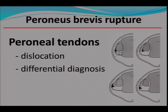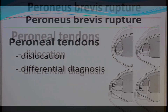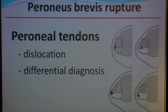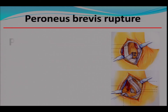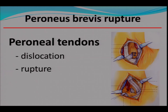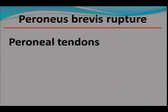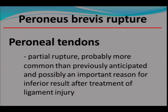Moving to the next topic — differential diagnosis — we come to the peroneus brevis rupture, which is probably much more common than we usually anticipate. This is a very important differential diagnosis, especially when we have long-term problems after ankle distortion that won't resolve with normal rehab. We are talking about the longitudinal rupture of the peroneus brevis tendon — almost always in the brevis tendon in more than 90% of cases — and it is a partial rupture. It may also be an important reason for inferior results after treatment of ligament injury.